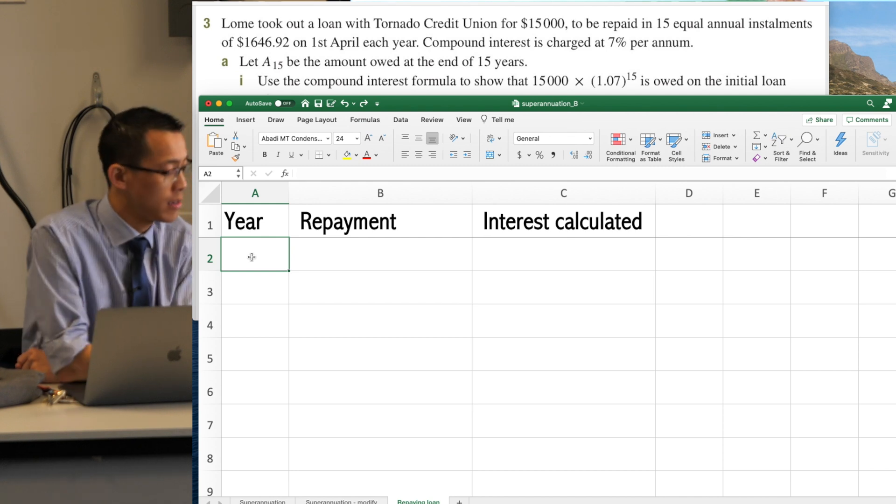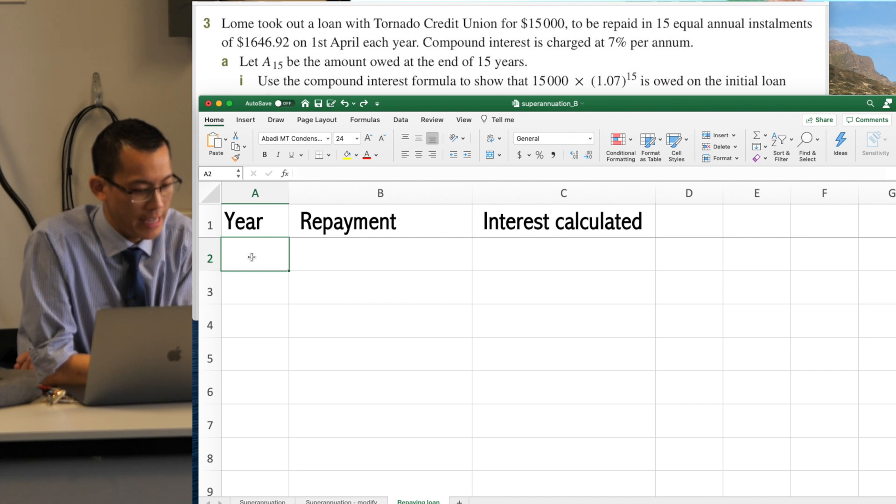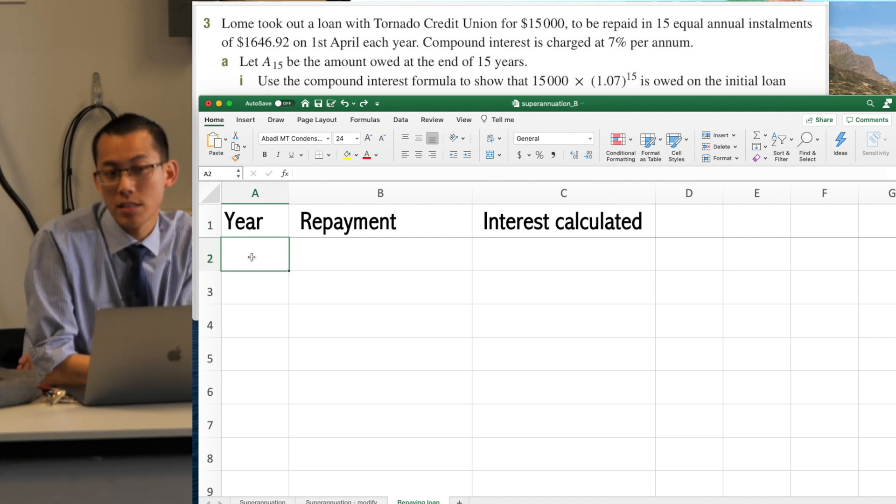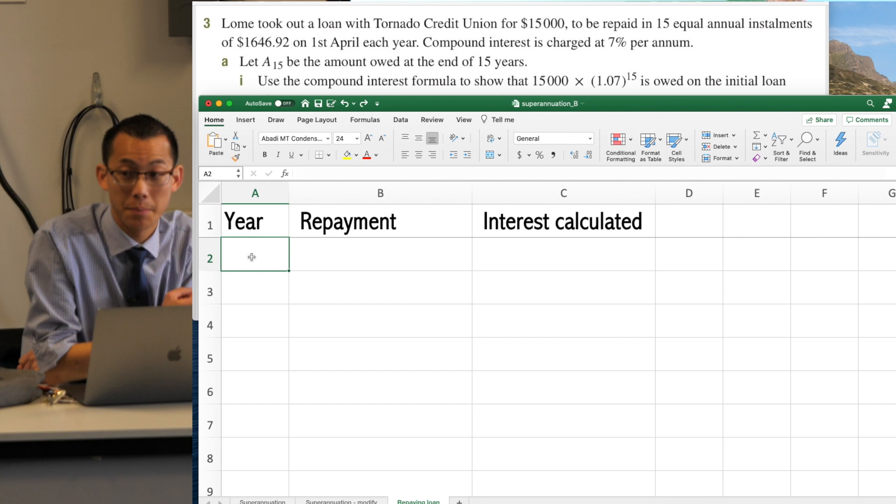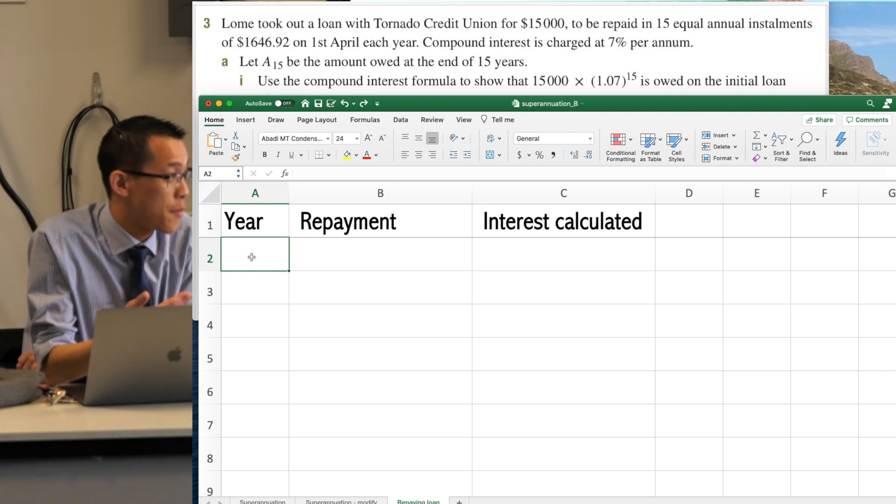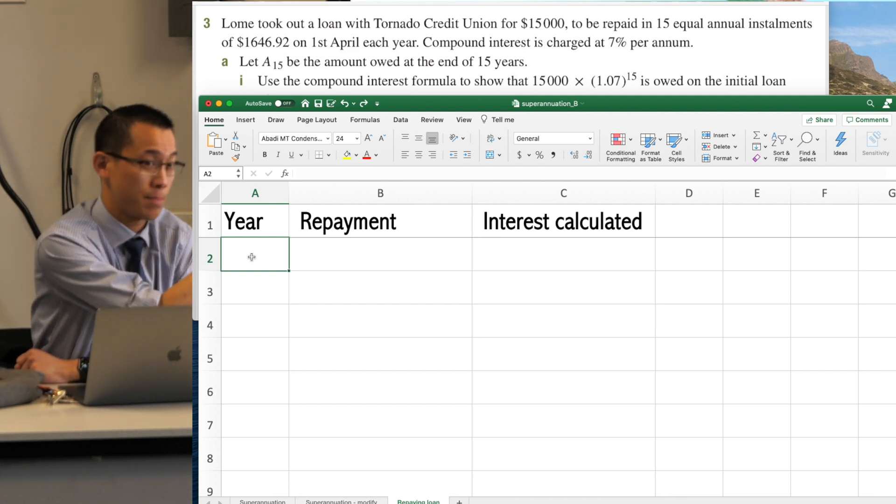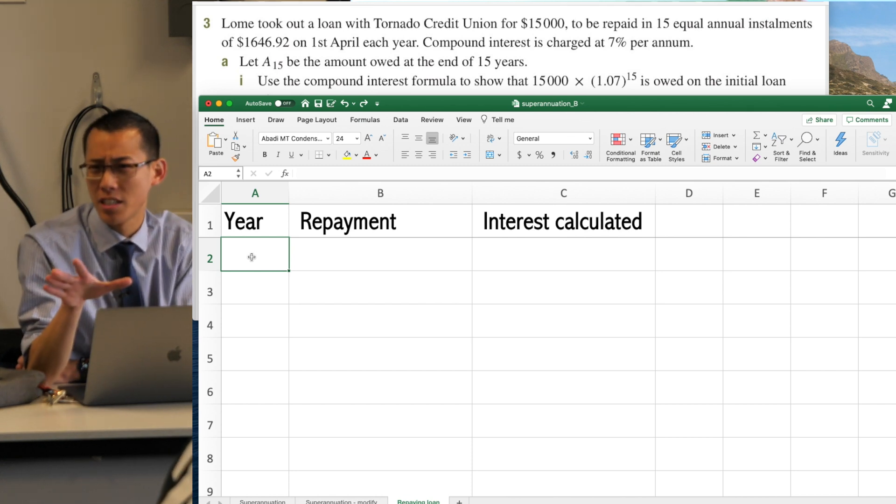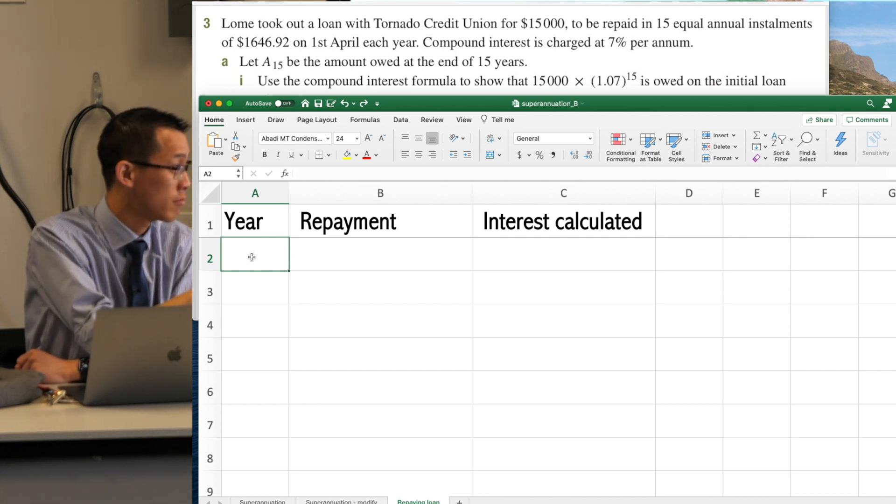It tells you it's on the 1st of April each year, and then they tell you an interest rate. What is the interest rate? 7% per annum. How often does it compound? Because no other information is provided, you can assume it's per annum, right? If they wanted it to be per month, they'd have to tell you. Thumbs up.